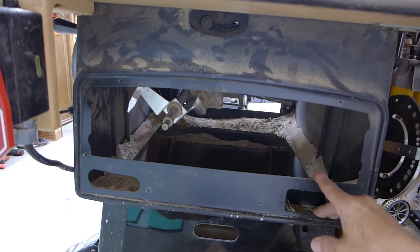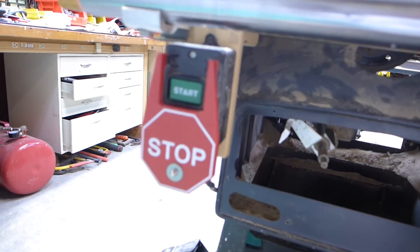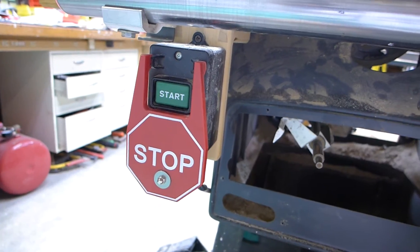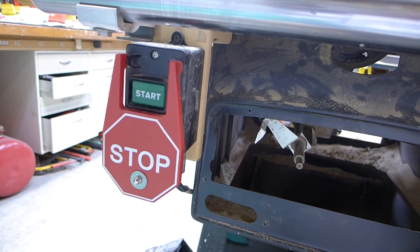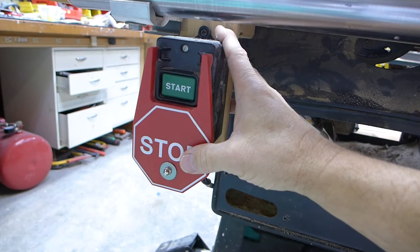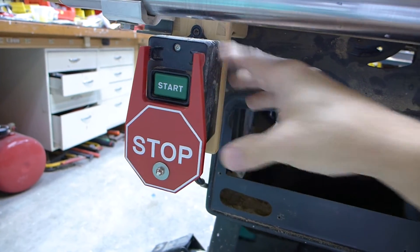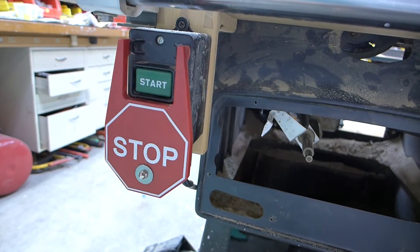So phase two was to put in this paddle switch over here and this is a standard switch you can get from places like Rockler where it's push on and then just engage the stop switch over here with your knee or your hand to turn it off. So that was convenient.